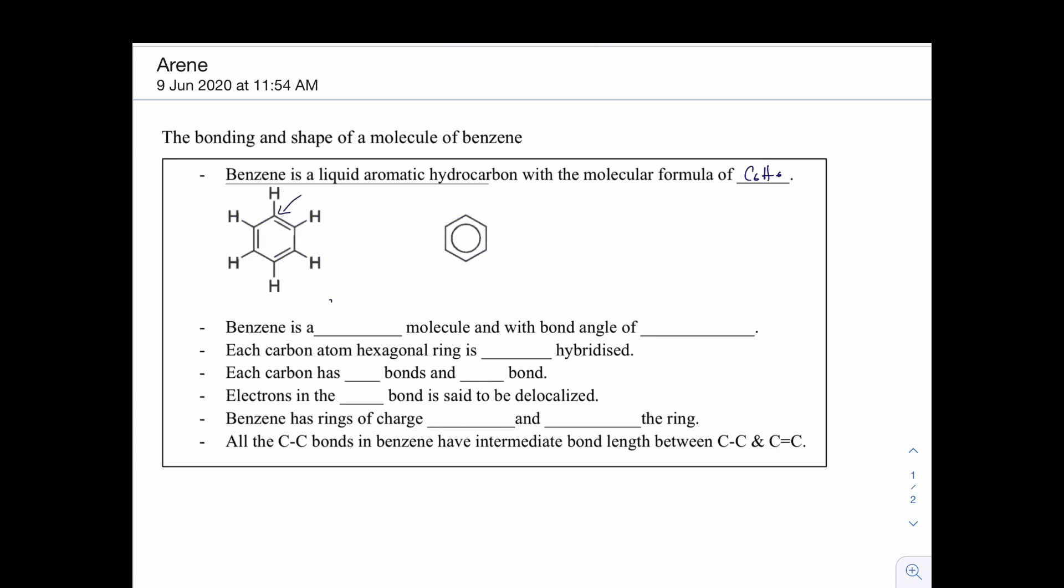Benzene is a symmetrical and planar molecule with the bond angle of 120 degrees. So why is that 120 degrees? Because if you look at one carbon, every carbon here has 1, 2, 3 sigma bonds. That means it has 3 electron clouds, or we say that 3 bonding pairs. So if it is 3 bonding pairs, in AS syllabus, we have learned that if it is 3 bond pair and there is no lone pair, it should be trigonal planar and it should be 120 degrees. So that explains why the bond angle is 120 here.